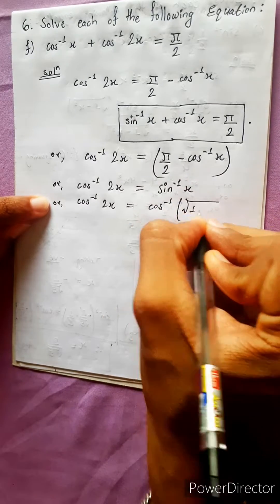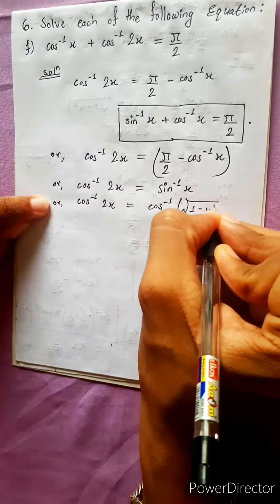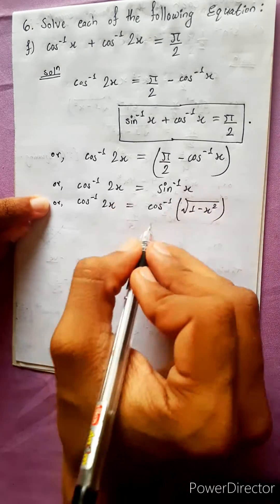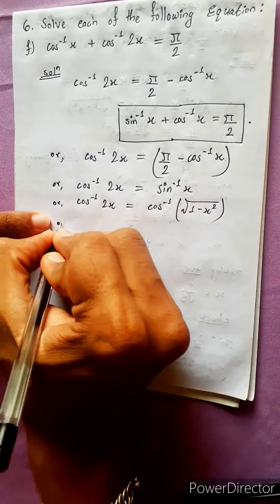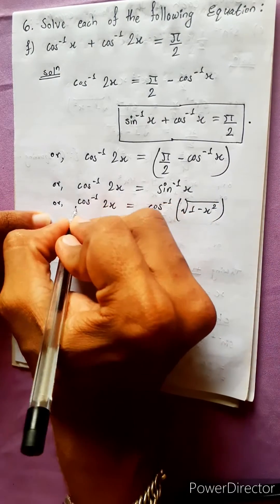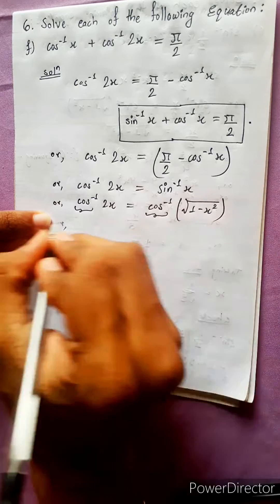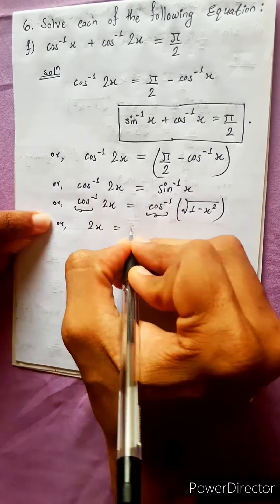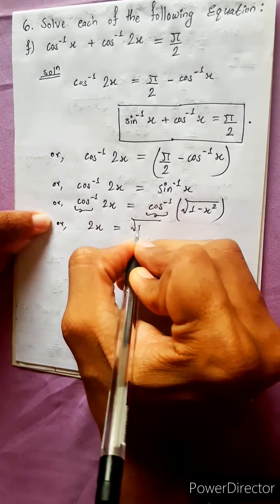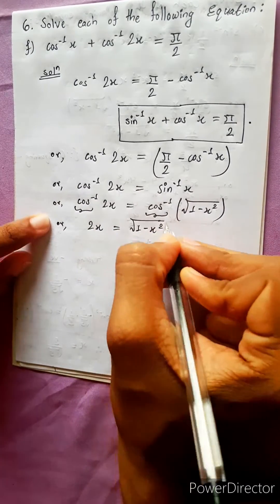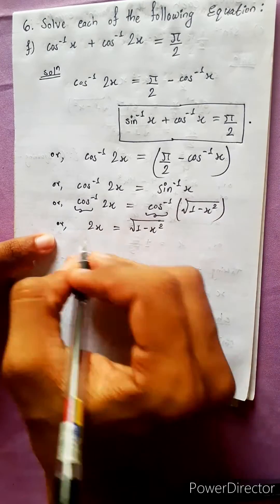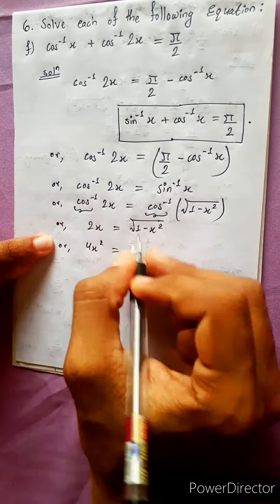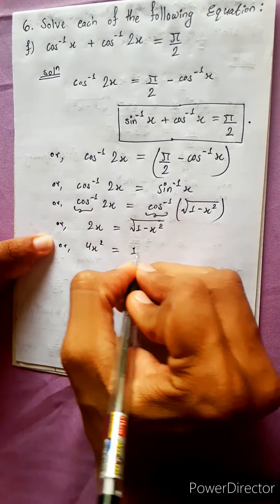Using the formula for 1 minus x square, cos inverse theta cancels. So 2x equals to under root 1 minus x square. Squaring both sides: 4x square equals to 1 minus x square, with the square root cancelled.